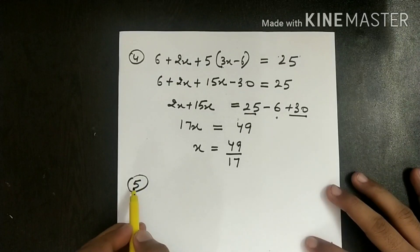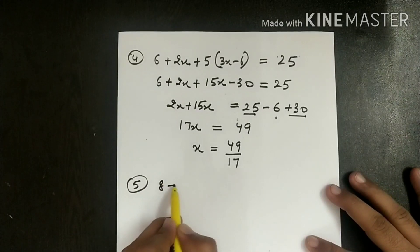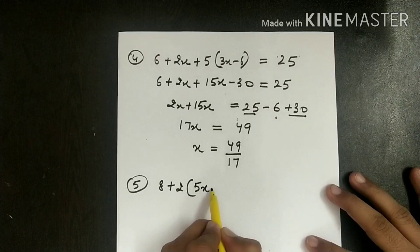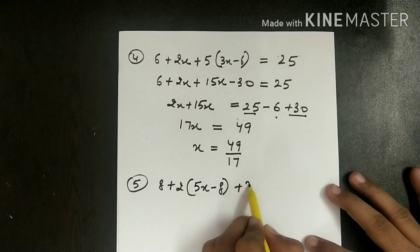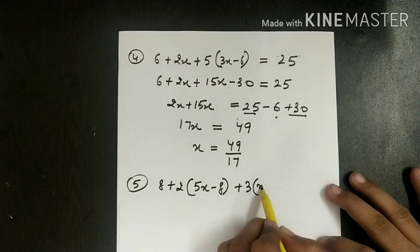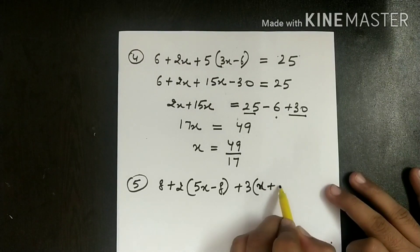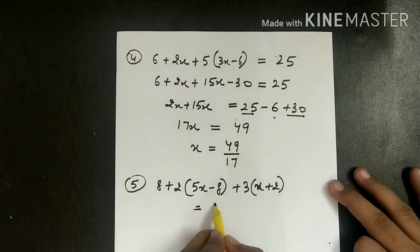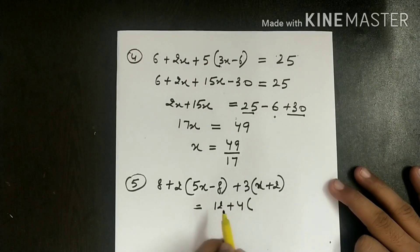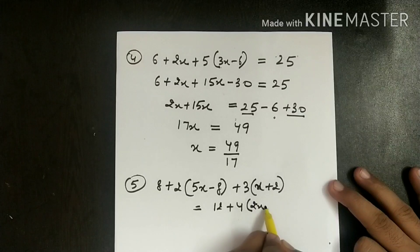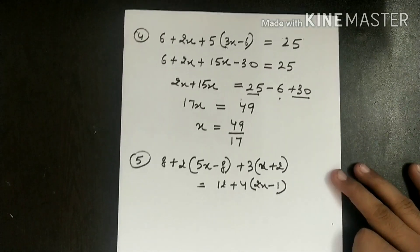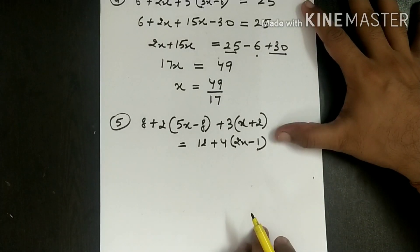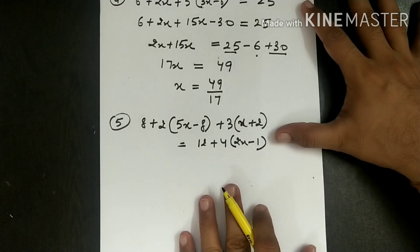Example 5: 8 + 2(5x - 8 + 3(x + 2)) = 12 + 4(2x - 1). We must first solve the brackets. Starting with the inner bracket: 3 × x = 3x and 3 × 2 = 6.